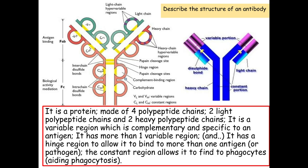Antibodies are proteins, so if you need to go back and have a look at your protein structure - as a recap, they are made of four polypeptide chains. You've got two light and two heavy chains, and these are held together with disulfide bonds, or disulfide bridges.